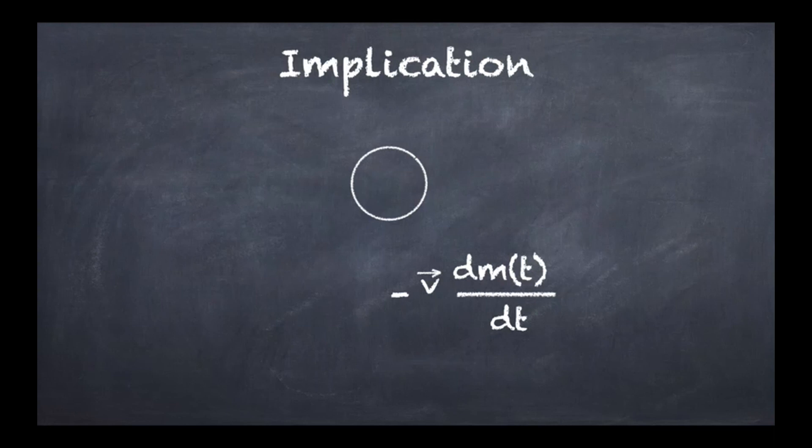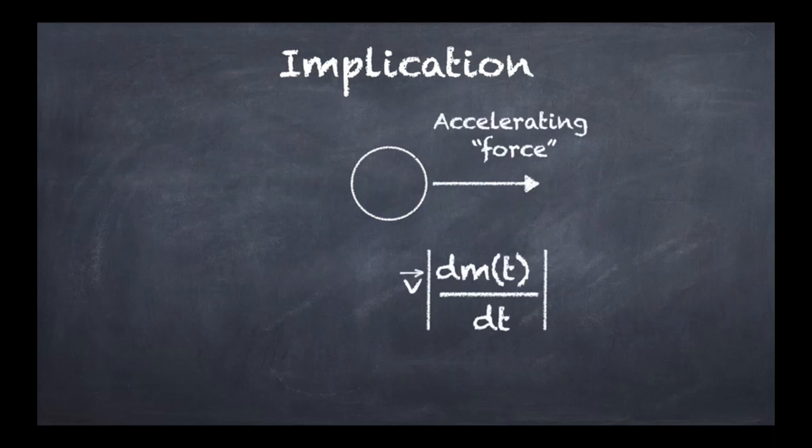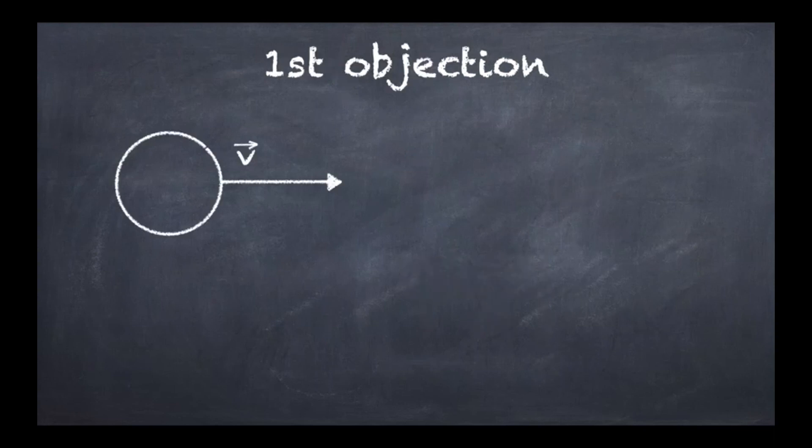Now because the rate of change of mass is negative, because the object loses mass, then we get that times minus it becomes a plus. So we are going to get a term which is like this, which means that we are going to have an accelerating force for the object. And therefore it's going to move like this and accelerate forward. Now let's have a look at the first objection to this particular scenario.